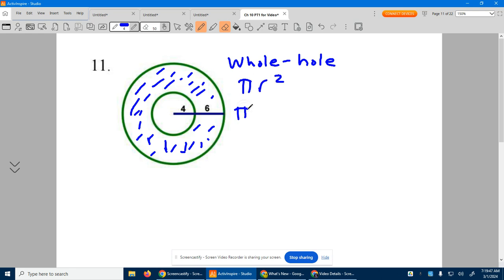so it's pi. What is the distance from here all the way out? 10, so it's 10 squared. We're going to be subtracting the hole,